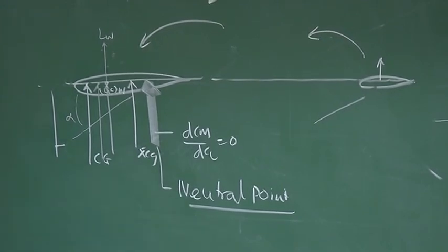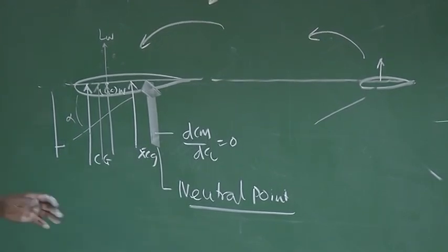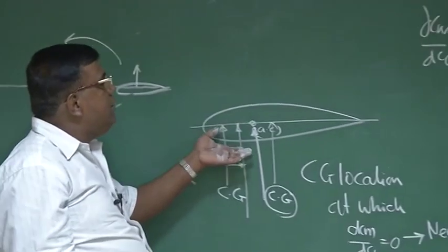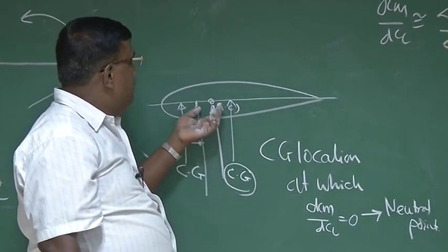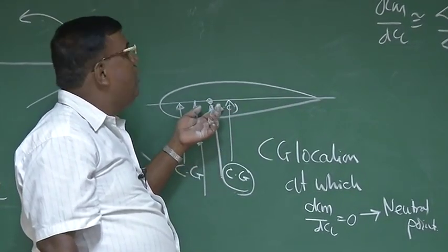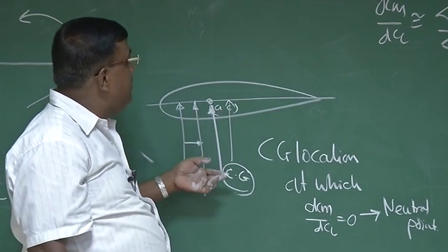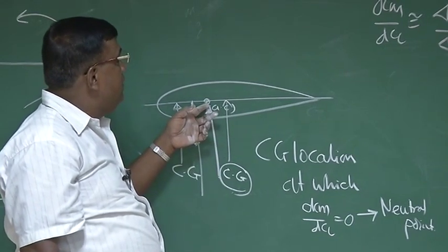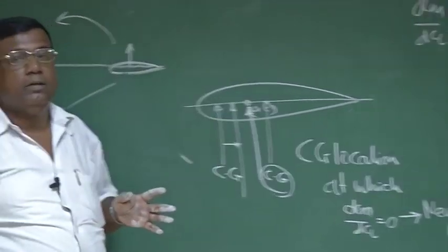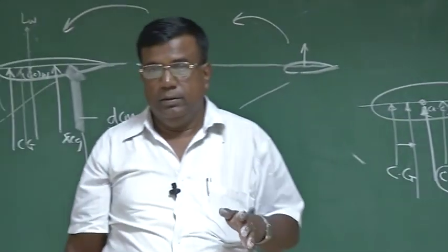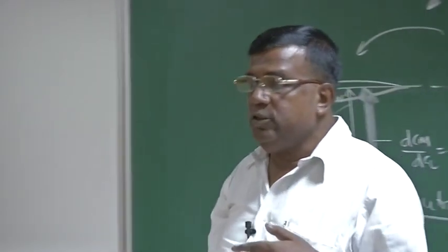Is it clear? For a wing-alone configuration having an aerofoil, the neutral point is the aerodynamic center. That is, if I keep CG just coinciding with the aerodynamic center, that is the neutral point. To make the aircraft statically stable, I must ensure that the neutral point is always behind the center of gravity.